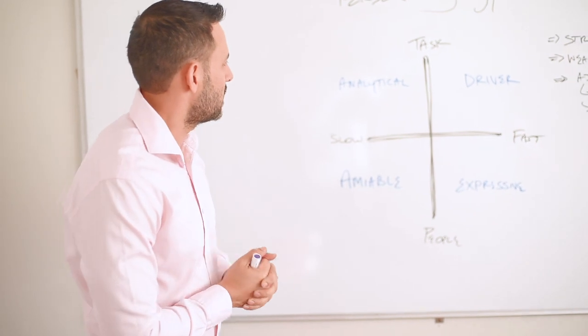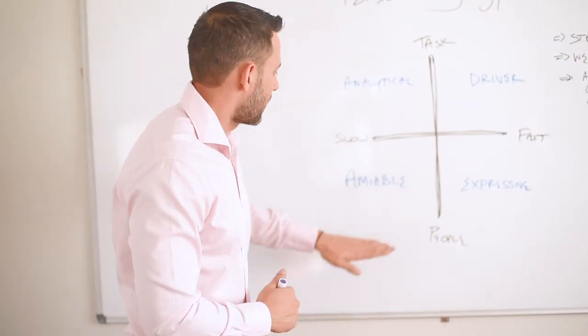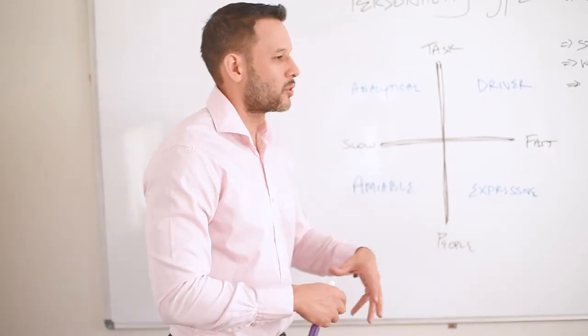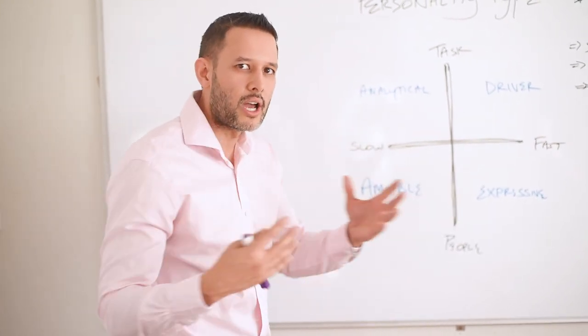Where other people may be, if they're analytical, they're about information, numbers, processes. Amiable's about people, so building relationships, connecting. Expressive people are about vision and energy and also they're like a frontline person.